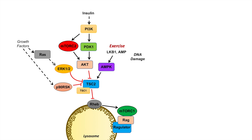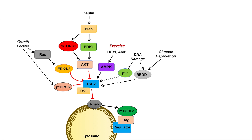Other things that lead to inhibition of mTOR signaling include cellular stress. One of the main cellular stress mechanisms involves DNA damage. DNA damage leads to the activation of p53 and REDD1, and these both ultimately lead to the activation of TSC2. Once TSC2 is activated, that leads to inhibition of mTOR complex 1. Interestingly, glucose deprivation — an indicator of energy deficiency — also activates REDD1, which ultimately suppresses mTOR signaling.